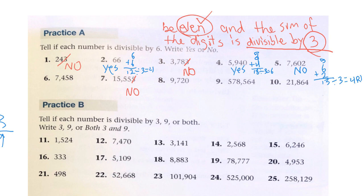One more. 7 plus 4 plus 5 plus 8: 7 and 4 is 11, 5 and 8 is 13, and 13 plus 11 is 24. Divide 24 by 3 and that equals 8 — that works. So yes, that number is divisible by 2 and 3, and therefore it is also divisible by 6.